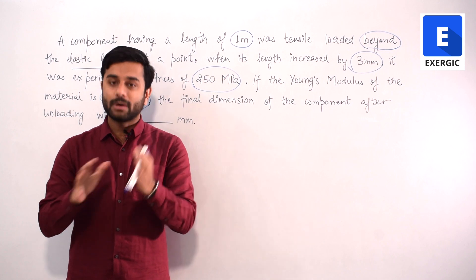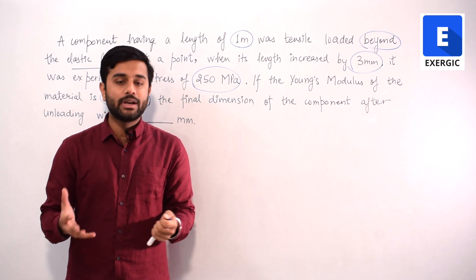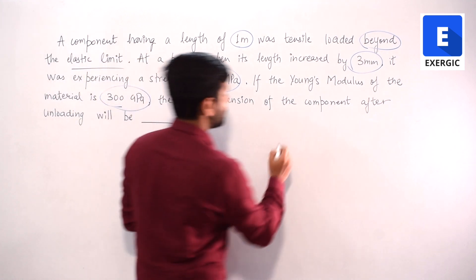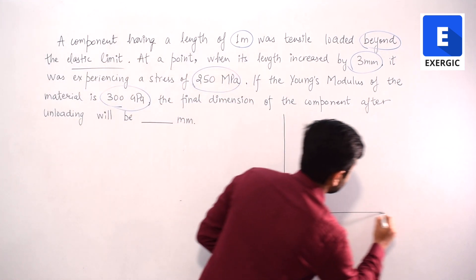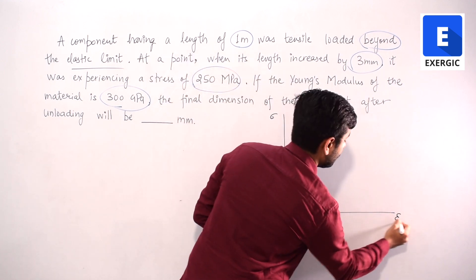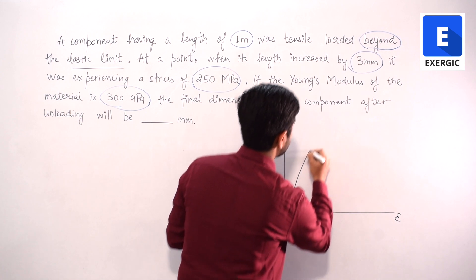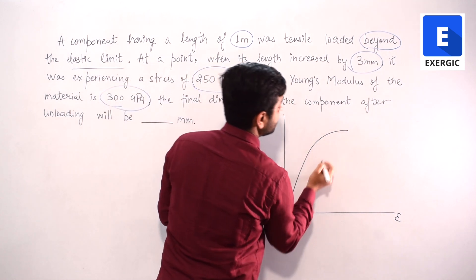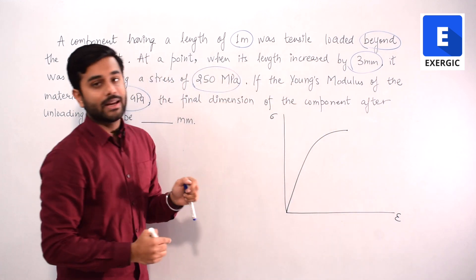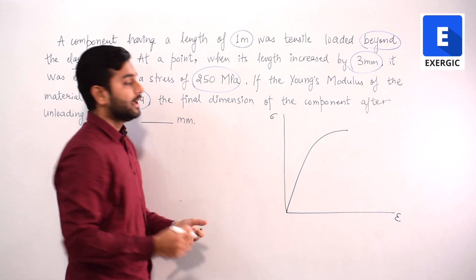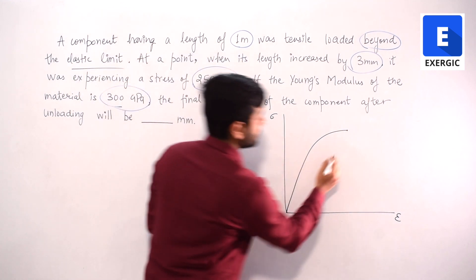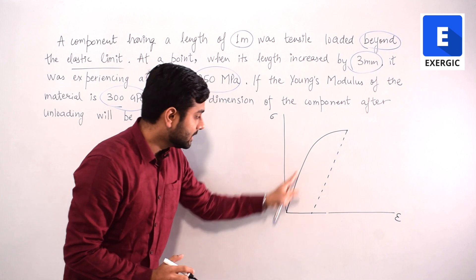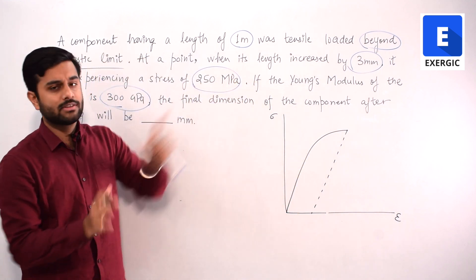Since we know the basics of permanent set and elastic recovery, I won't re-explain those terminologies — refer to your course for that. We will consider the two situations to understand what happens. This component is loaded beyond the yield point, and after reaching a certain point it is unloaded. We know that whenever such unloading occurs after entering the plastic zone, it follows the same slope as the Young's modulus.